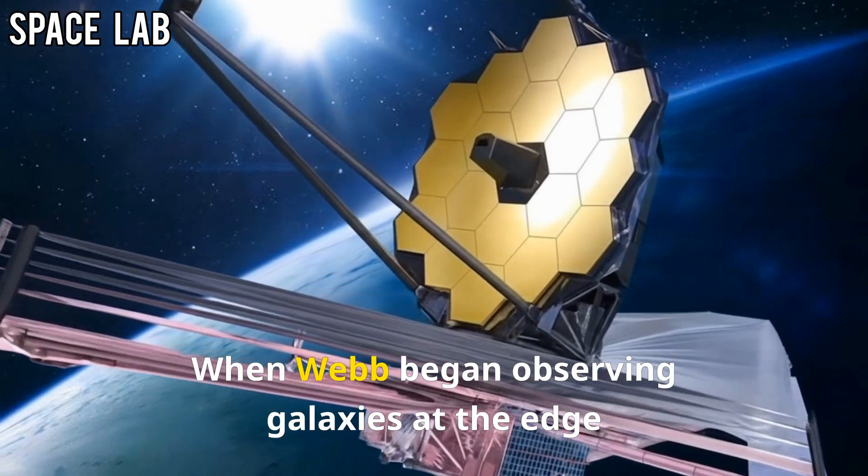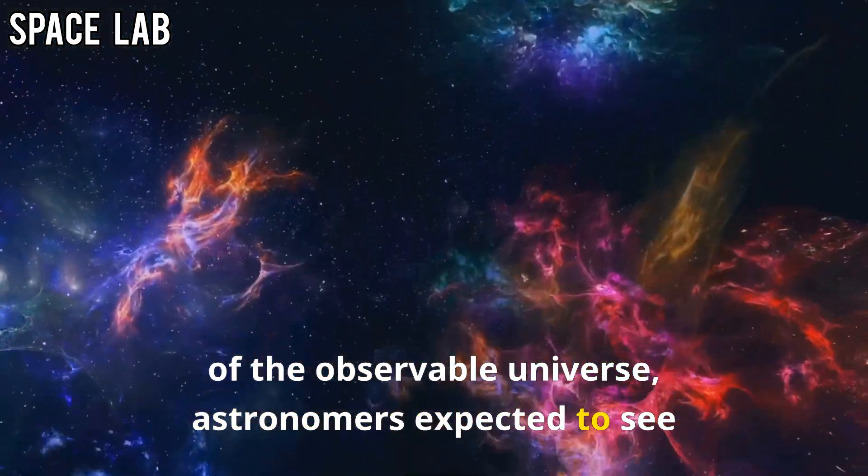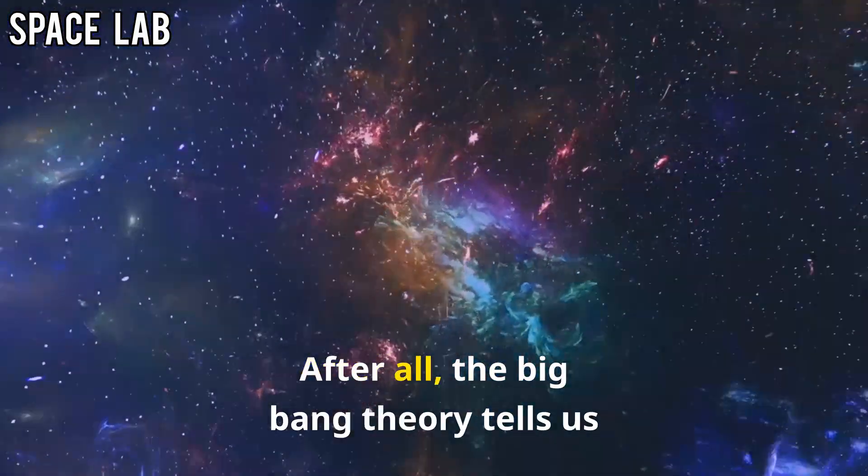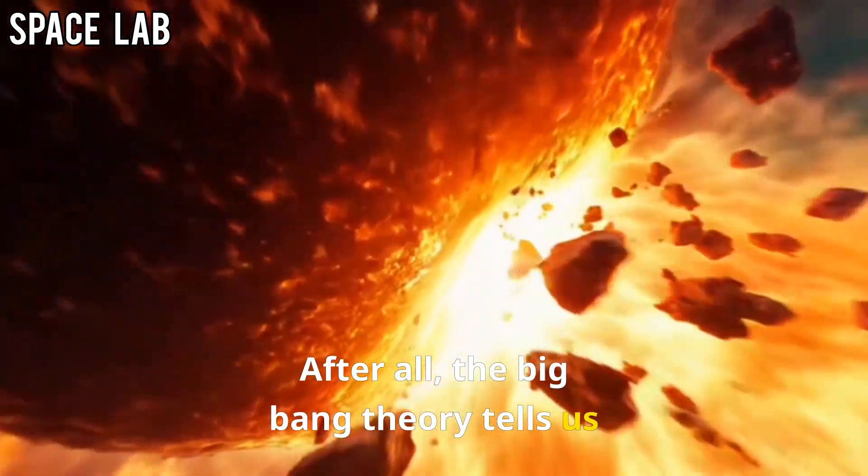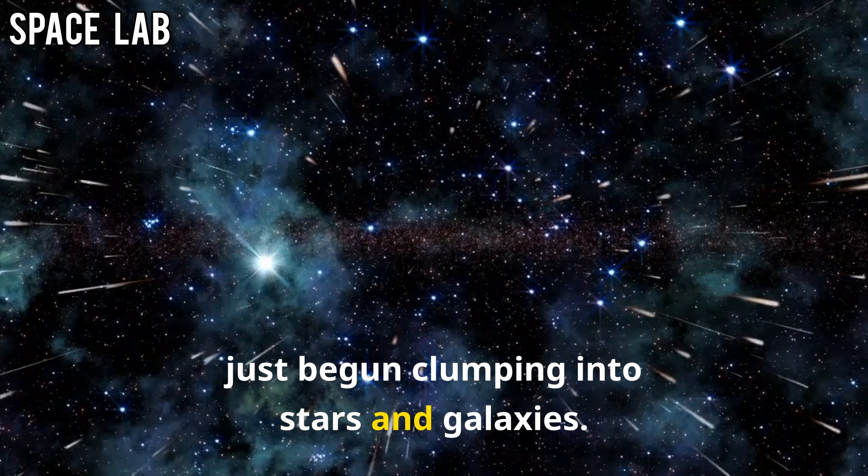When Webb began observing galaxies at the edge of the observable universe, astronomers expected to see young, chaotic, and primitive structures. After all, the Big Bang theory tells us that in the early universe, matter had only just begun clumping into stars and galaxies.